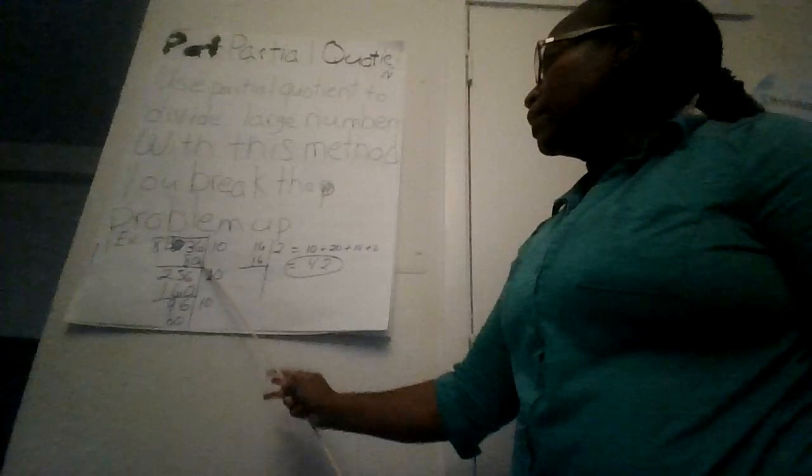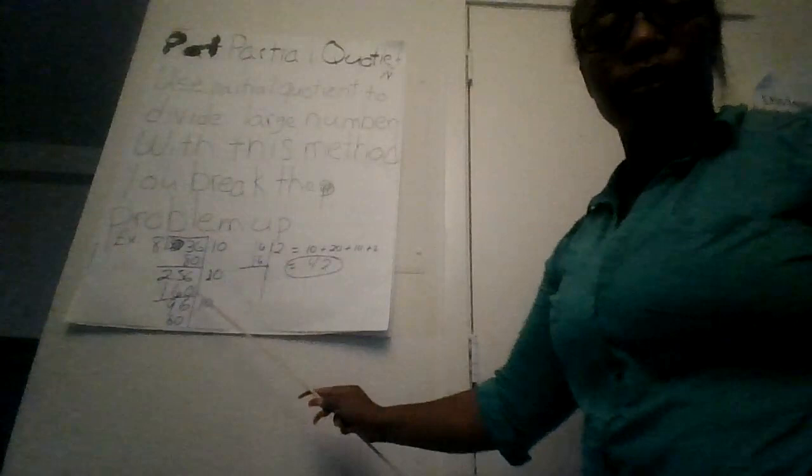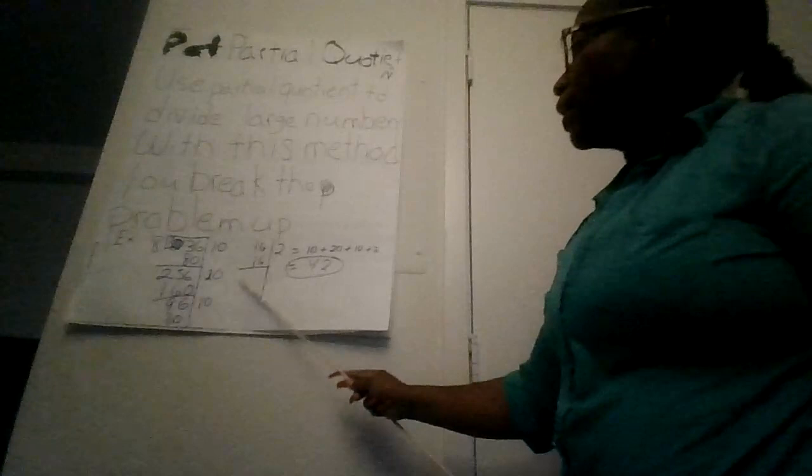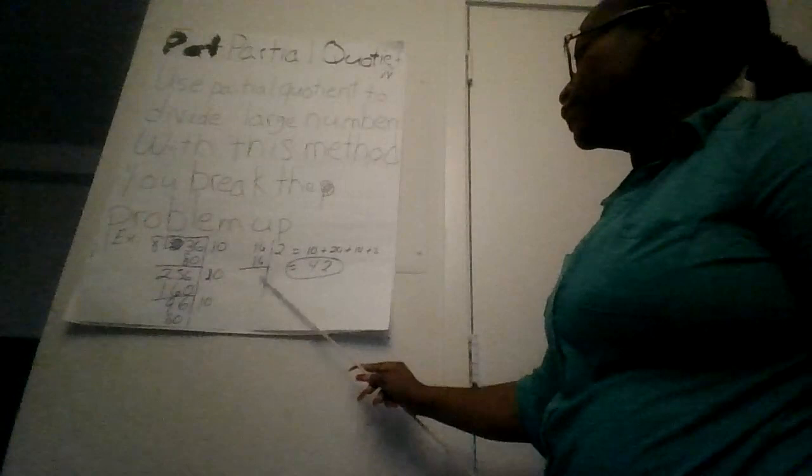Multiply 8 times 10, which is 80. Subtract 80 from 336 to get 256. Then 8 times 20 is 160. Subtract that to get 96. Then 8 times 10 is 80. Subtract 80 from 96 to get 16.